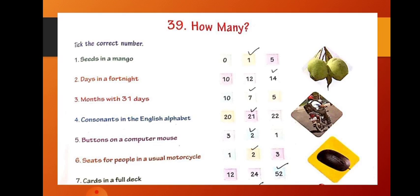That is, B, C, D, F, G, H, J, K, L, M, N, P, Q, R, S, T, V, W, X, Z, Y. All these are consonants. Except A, E, I, O, U. Rest all are consonants.